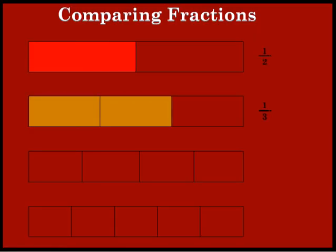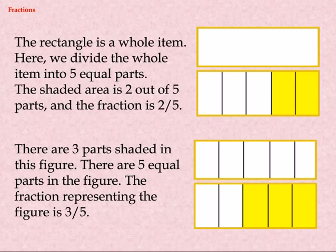Comparing Fractions. The rectangle is a whole item. Here, we divide the whole item into five equal parts. The shaded area is two out of five parts, and the fraction is two by five. There are three parts shaded in this figure. There are five equal parts in the figure. The fraction representing the figure is three by five.